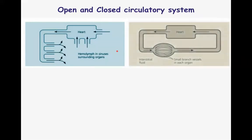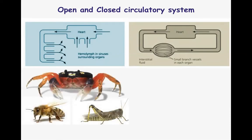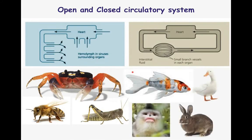In a closed circulatory system, like the system which we have, the heart directly pumps the blood to vessels and these carry it back to the heart, so the blood never gets a chance to come into open spaces. This kind of system is found in higher mammals, birds, and fishes. The open circulatory system is found in insects, honeybees, locusts, crabs, prawns, and lobsters. The closed circulatory system is found in all fishes, birds, and all mammals and higher animals.